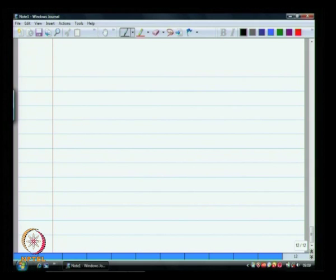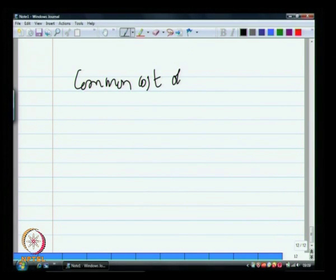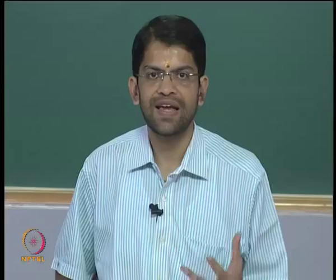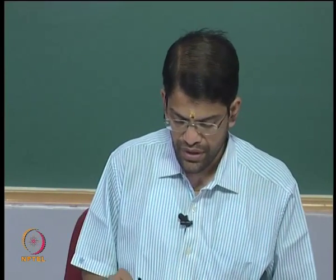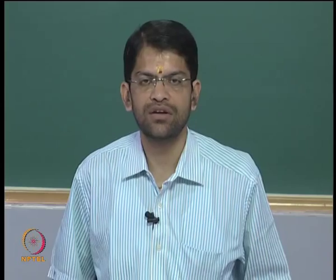The most common cost object of any business is a product — any business engages in delivering a product or rendering a service. So a product or service is the most common cost object for our discussion. Because a product is tangible, and a service may involve intangible cost objects, we need to understand the product costing system and how costs are allocated to the cost object.